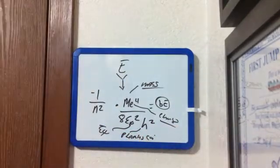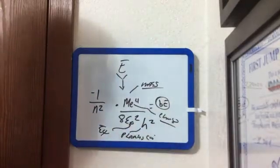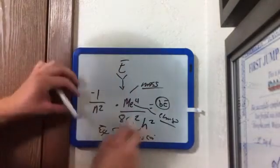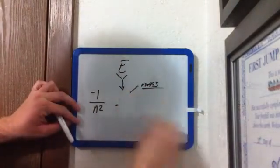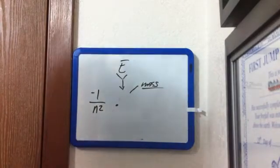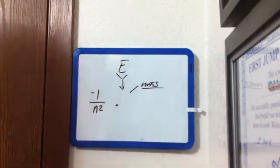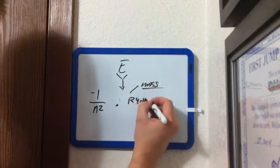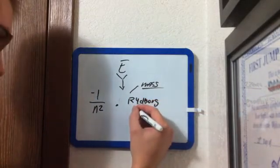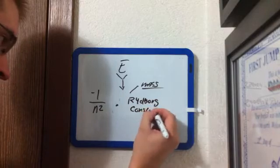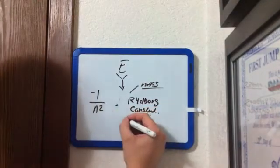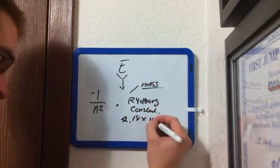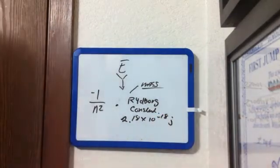Alright, so really this whole half, if you want to look at it, the equation is just nothing but one big constant. And what we can do is we can throw all these numbers together, or all these constants together, put them all together, and we can reduce that to something called the Rydberg constant. And what that comes out to be is 2.18 times 10 to the negative 18 joules. So it's a pretty small number.